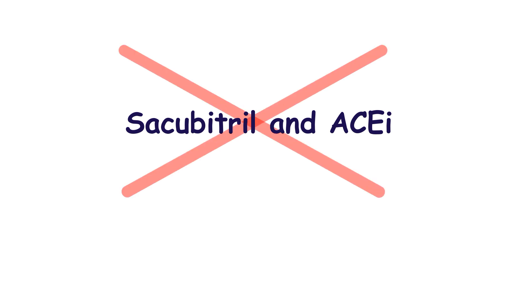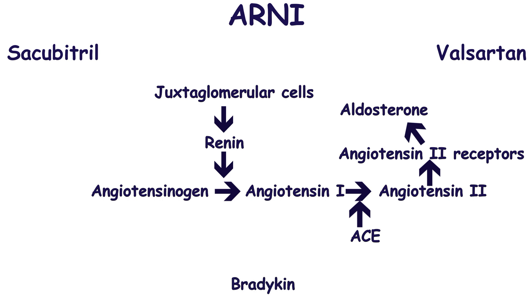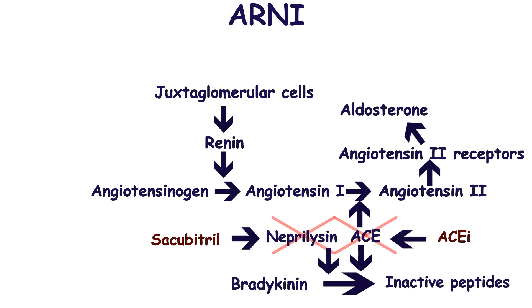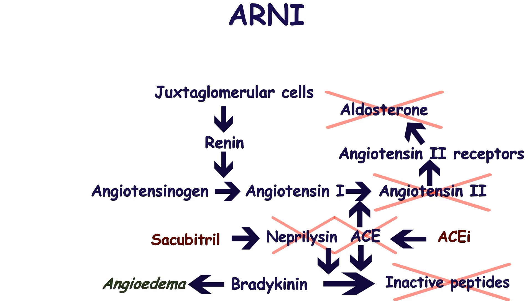Why should sacubitril not be combined with angiotensin-converting enzyme inhibitors? Besides natriuretic peptides, bradykinin is degraded by neprilysin as well. Angiotensin-converting enzyme also breaks down bradykinin. So both sacubitril and ACE inhibitors cause an increase in bradykinin level, and their combination creates a bradykinin concentration too high, causing side effects of an excessive amount of bradykinin. This is associated with angioedema, which is significantly rarer if the sacubitril-valsartan combination is used instead.